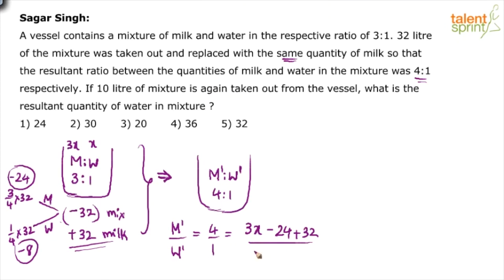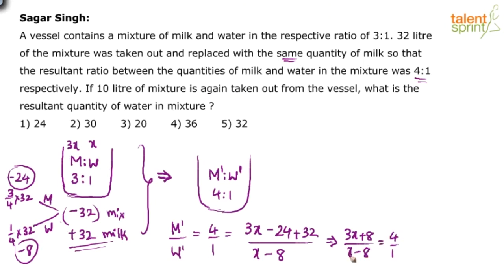Setting up the equation: (3x + 8) / (x - 8) = 4 / 1. Cross-multiplying: 3x + 8 = 4x - 32. So 4x - 3x = 8 + 32, giving x = 40.